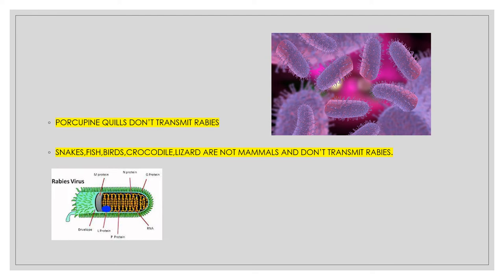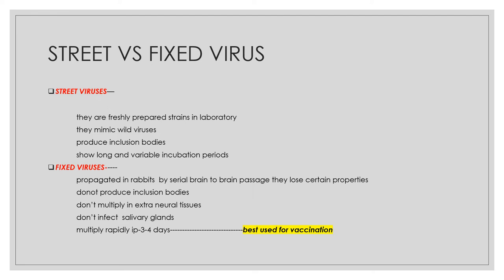Even though a porcupine can transmit rabies, porcupine quills do not transmit it. Snakes, fish, birds, crocodiles, and lizards are not mammals and don't transmit rabies. If a patient comes with a scratch or bite from these animals, you do not give anti-rabies vaccine (ARV) or serum.